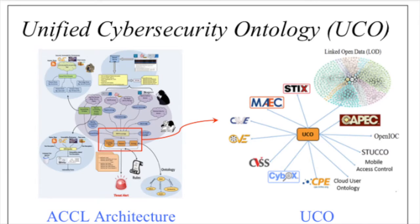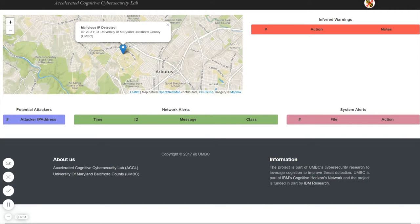That is what we are trying to push the boundary on in our project. We start by using the Unified Cybersecurity Ontology, which combines disparate sources of information such as CVE and STIX with sensor information gathered from the network. The UI shows an amalgamation of this information with all the inferred warnings for administrators.